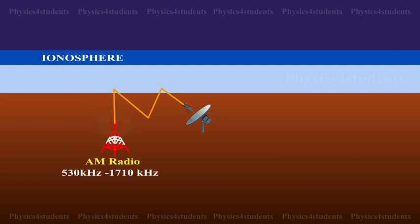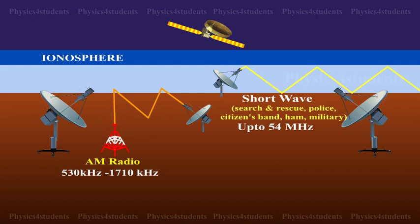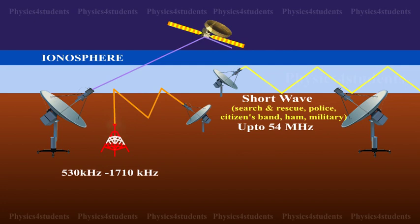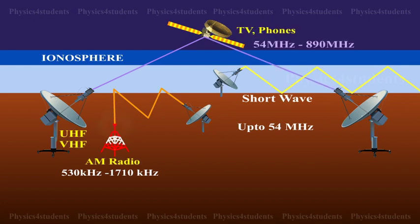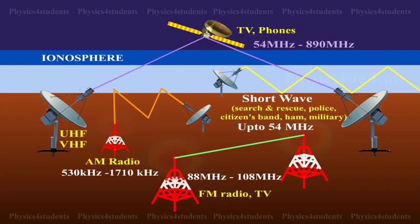AM band is from 530 kHz to 1710 kHz. Higher frequencies up to 54 MHz are used for shorter wave bands. Television waves range from 54 MHz to 890 MHz. FM band is from 88 MHz to 108 MHz.